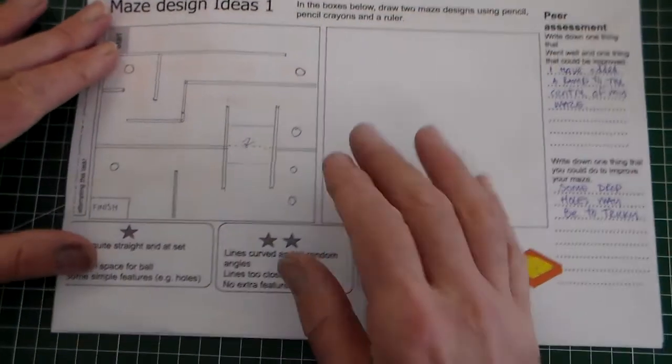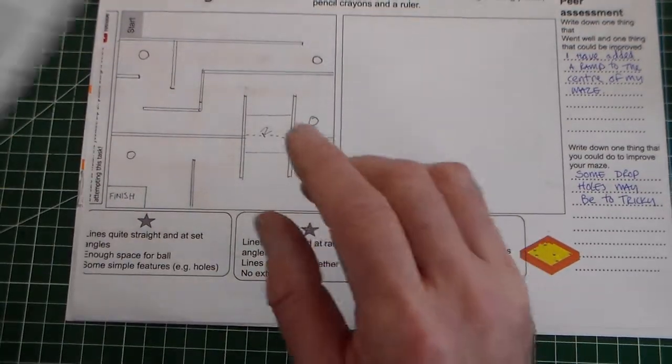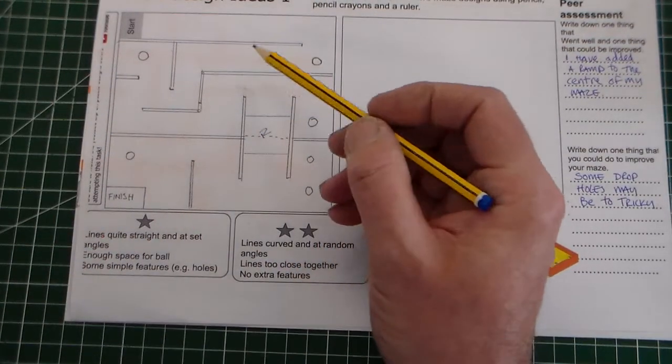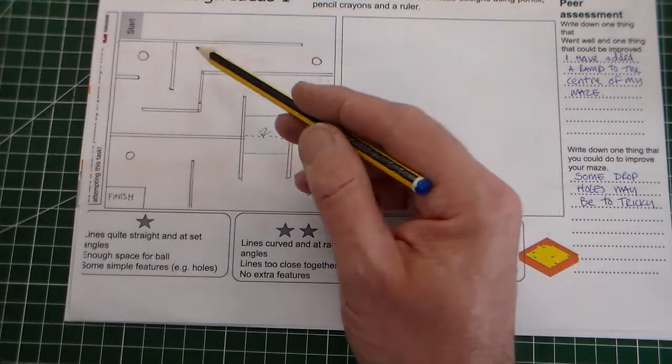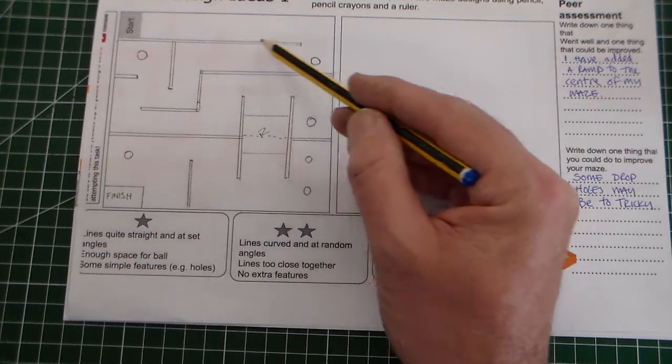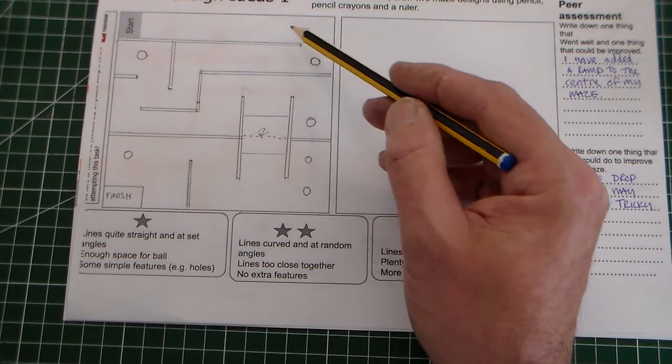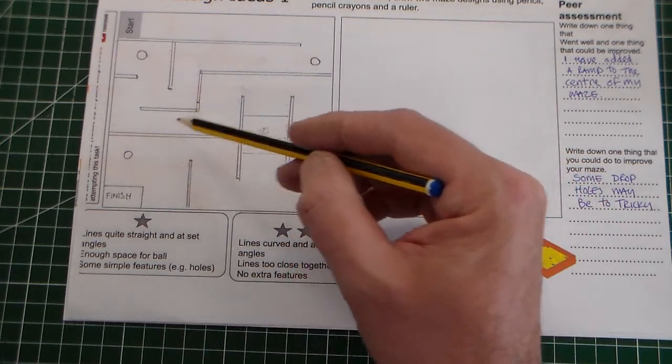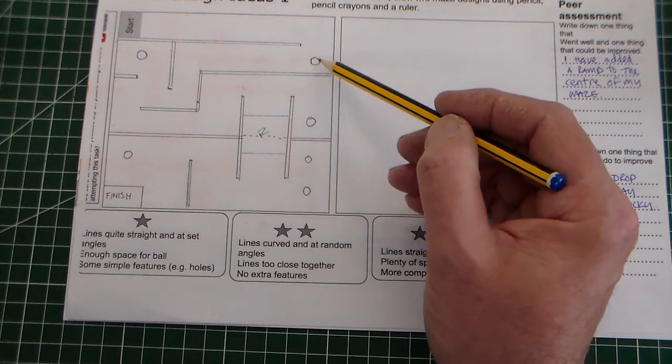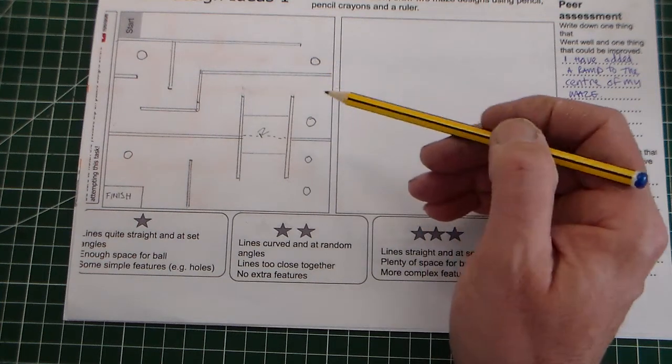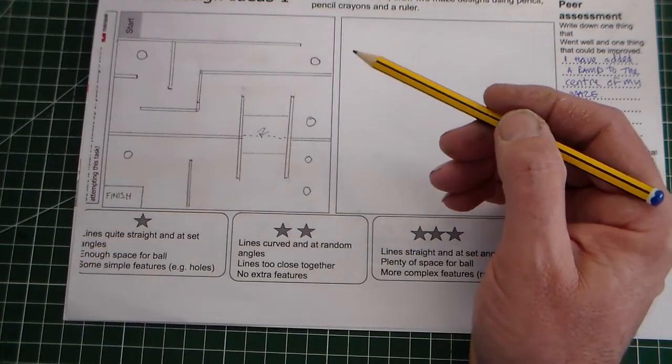So we're going to start off here on maze design sheet one. I've created a design here using a pencil and a ruler. I've drawn my design from maze, so I've got a start here which is already on and I've got a maze which comes round here. I've worked out the root of my maze. I've added drop holes here, which are small circles, about six millimeters in diameter, and they're for the small steel balls to just drop down.